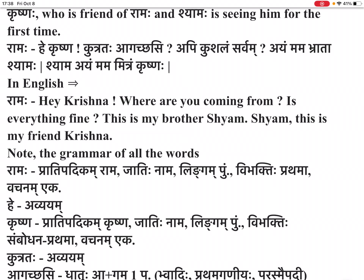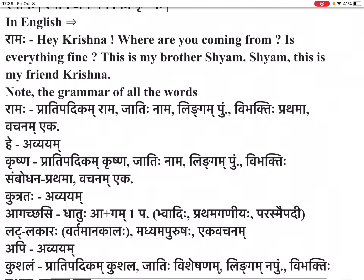He: avyayam. Krishna: pratipatikam krishna, jatihi nama, lingam ullingam, vivaktihi sambodhana prathama, vachanam ekvachanam. Kutrataha: avyayam. Agachasi: dhatuhu — a plus gam, prathamaganiyaha parasmaipadena, vhadihi prathamaganiyaha parasmaipadena, latlakara, vartamankala, madhyama purushaha, ekvachanam.